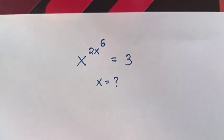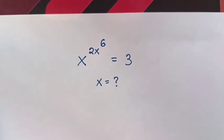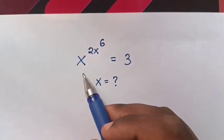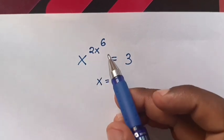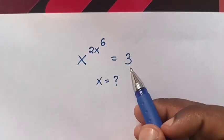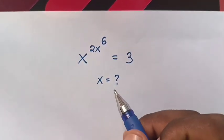Hello, how to solve this exponential equation: x power 2x power 6 is equals to 3. To find the value of x.